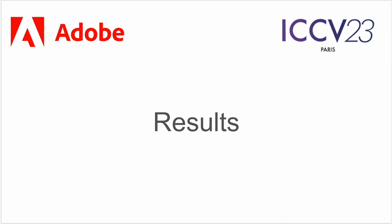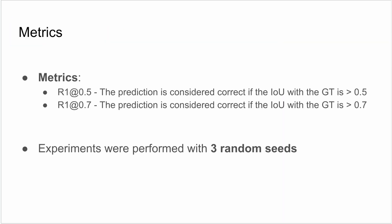Now, let's see our main results. We use two main metrics to evaluate our model. The R1 at 0.5 metric checks if our model's prediction matches more than 50% of the annotated segment, using intersection over union with the ground truth.